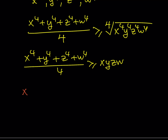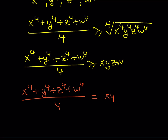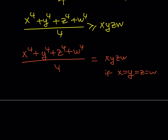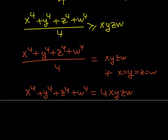This inequality becomes an equation exactly when x, y, z, w are all equal. Cross-multiplying gives x to the fourth plus y to the fourth plus z to the fourth plus w to the fourth equals 4xyzw — which is our original equation. So if they're all equal, the equation is satisfied, and we get the same solution set. Thank you for watching — I'll see you in the next video. Take care, bye-bye.